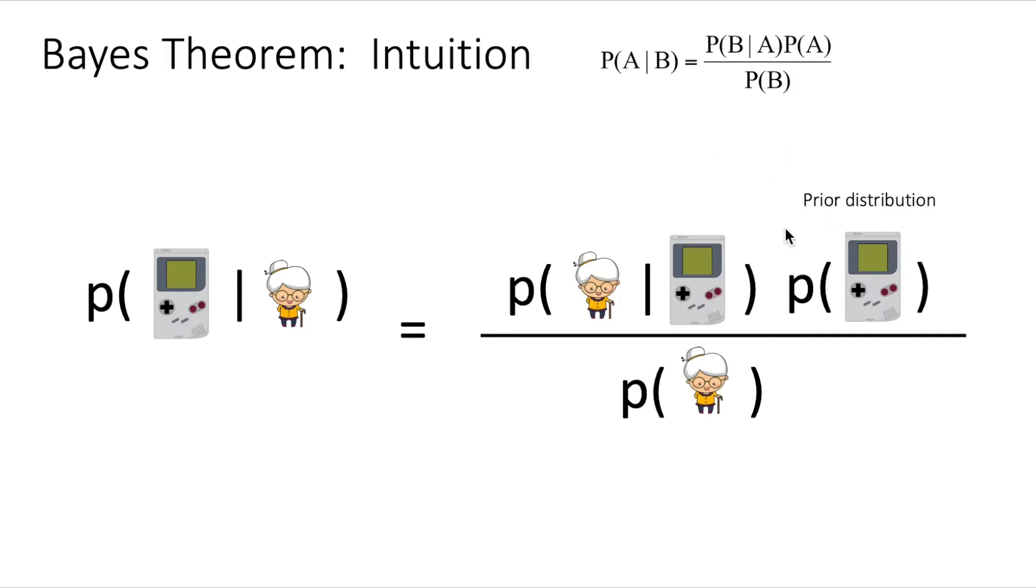And this is the prior distribution. So in case we have very few cases where clients bought a Game Boy, this prior probability is going to be low and it's going to balance this case. So in other words, it's saying, okay, high percentage of your clients that bought a Game Boy were old ladies, but given that in very few cases we sell Game Boys, you should consider that information into the probability of purchase of this item.